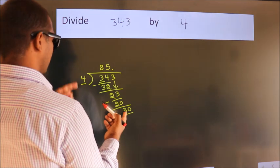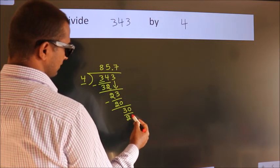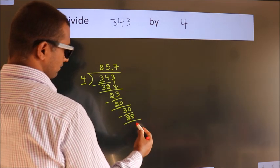A number close to 30 in 4 table is 4 times 7, 28. Now, we subtract. We get 2.